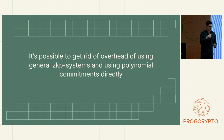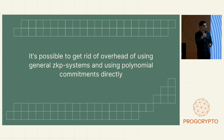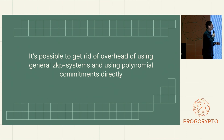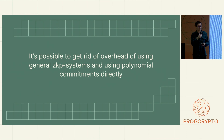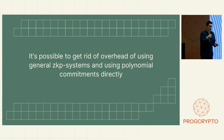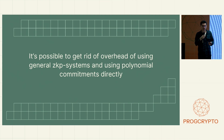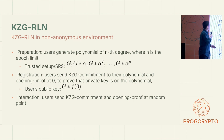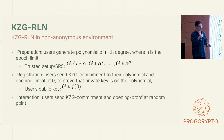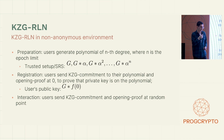To reduce proving time, it's actually possible to get rid of the overhead of using general ZKP systems by using polynomial commitments directly. For example, with KZG RLN — KZG is a polynomial commitment scheme; it's essentially a proof of opening of the evaluation of a polynomial while not disclosing the polynomial itself, which is exactly what we do in the RLN circuit. There are two options: KZG RLN for non-anonymous environments and KZG RLN for anonymous environments.